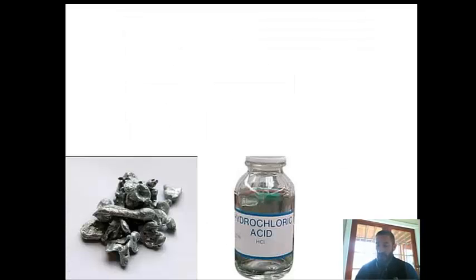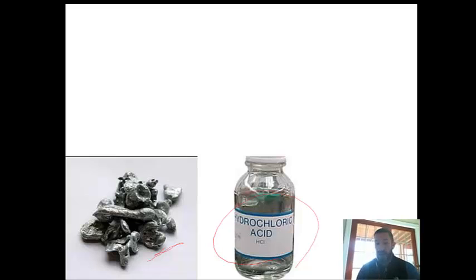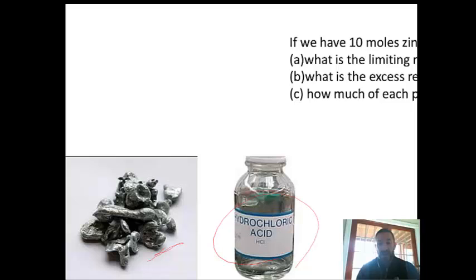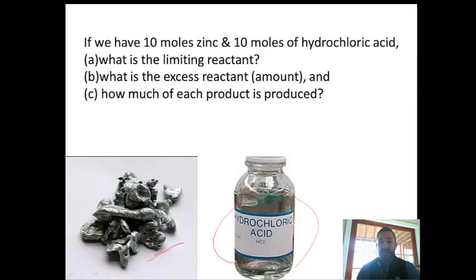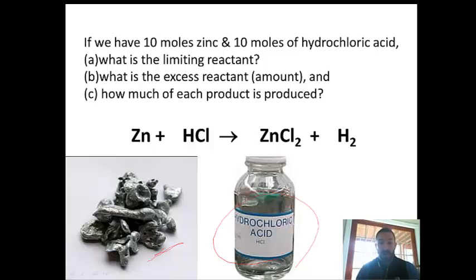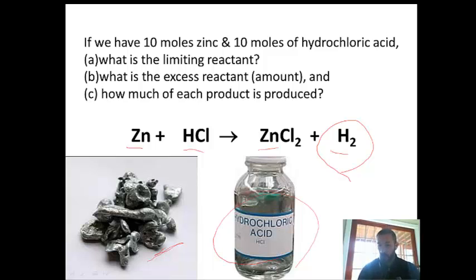Now let's do this with an actual reaction. We have 10 moles of zinc and 10 moles of hydrochloric acid. The three things we want to find out are: what is the limiting reactant, how much excess reactant remains, and how much product is produced. The reaction is: zinc plus hydrochloric acid produces zinc chloride and hydrogen gas. To balance the equation, put a coefficient of 2 in front of hydrochloric acid. We're going to change both reactants to hydrogen gas to find the limiting reactant.